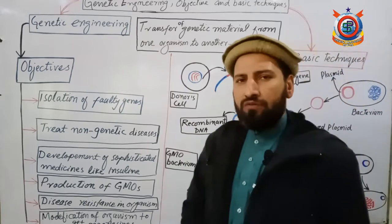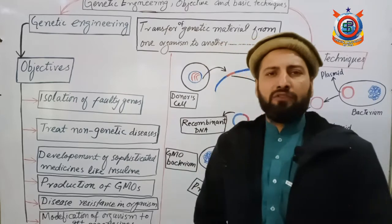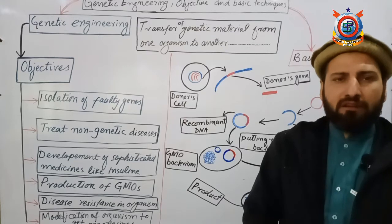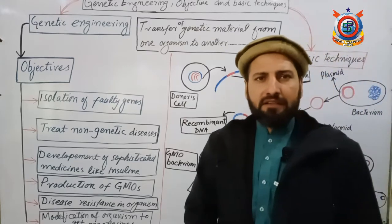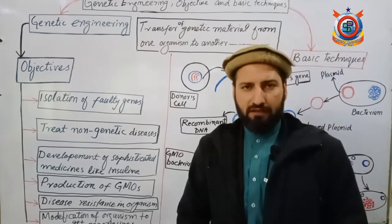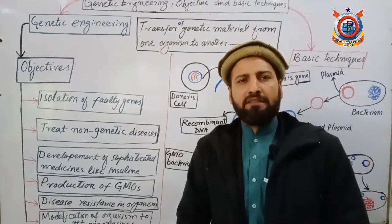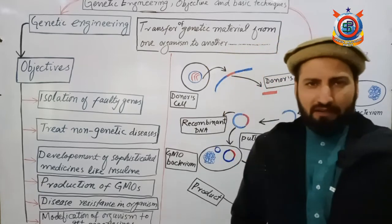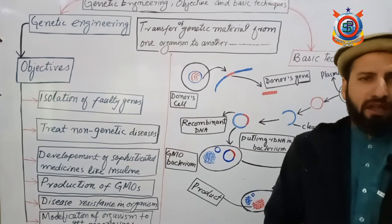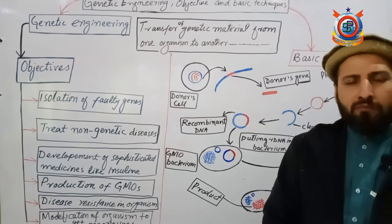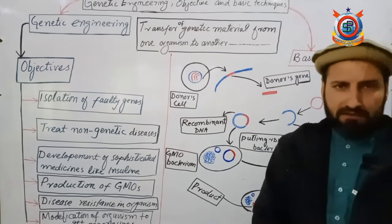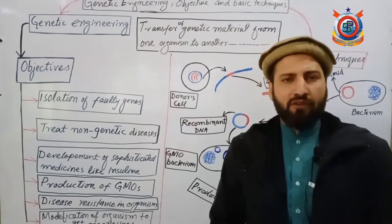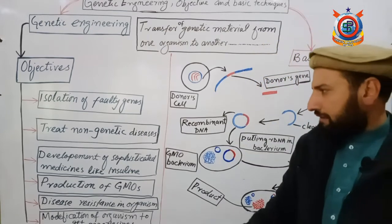The second objective is to treat non-genetic diseases — illnesses that are not caused by a faulty gene but rather by some other disorder that arises in the body during a lifetime. Such diseases can be treated with medicine, so producing medicine for these diseases is the work of genetic engineers. They modify plants and animals and obtain different medicines for various diseases. This is the second motive: to treat non-genetic diseases.